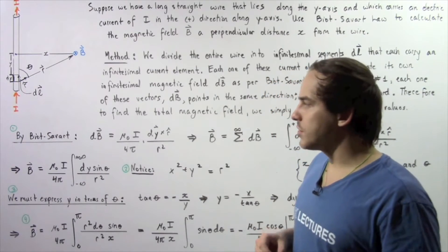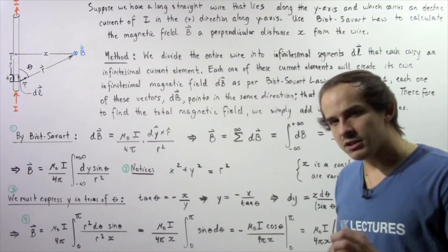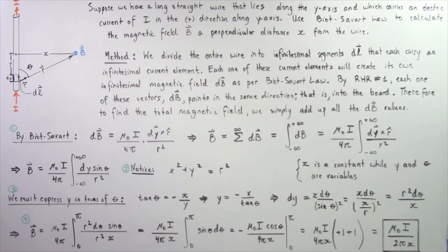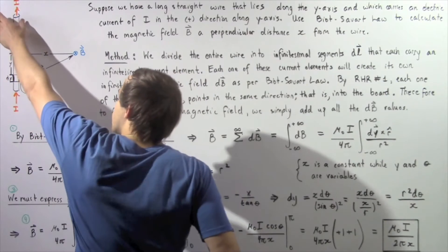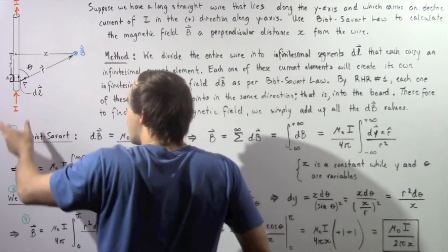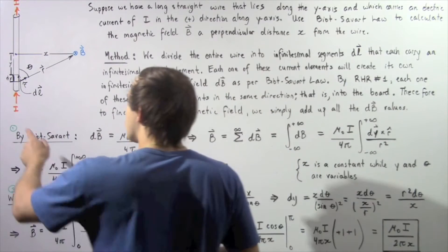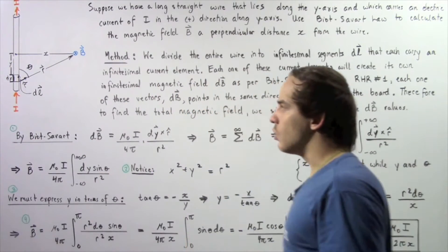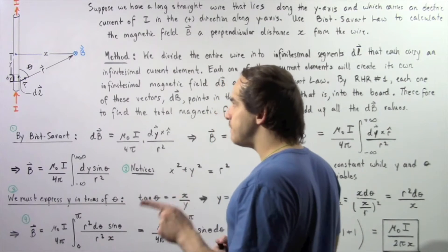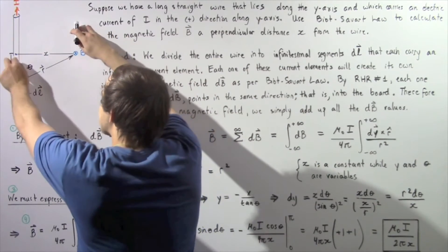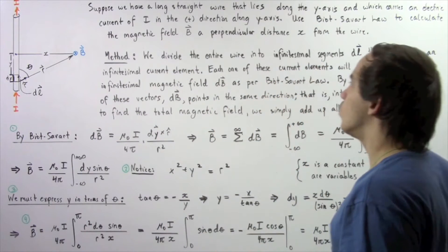Let's look at the following example that deals with applying the Biot-Savart Law. Suppose we have an infinitely long straight wire that runs along the y-axis and carries an electric current I pointing in the positive y-direction. This infinitely long straight wire extends towards negative infinity and positive infinity along the y-axis. We want to calculate what the magnetic field B is at a perpendicular distance x from our wire.